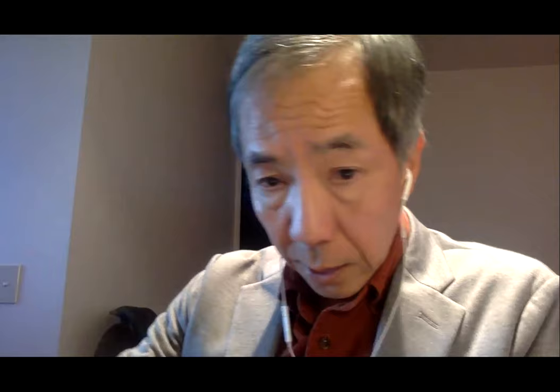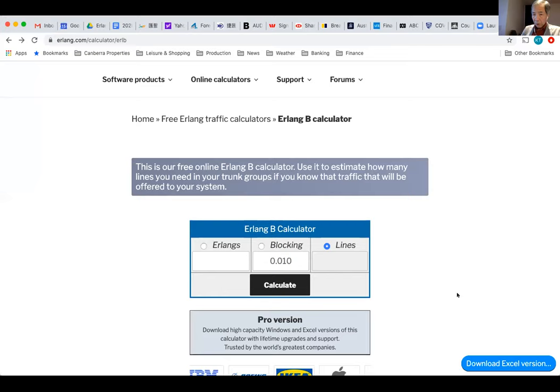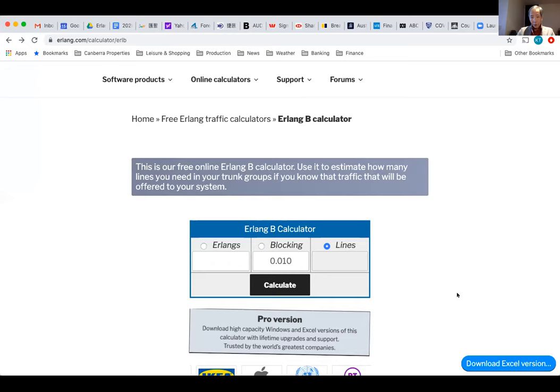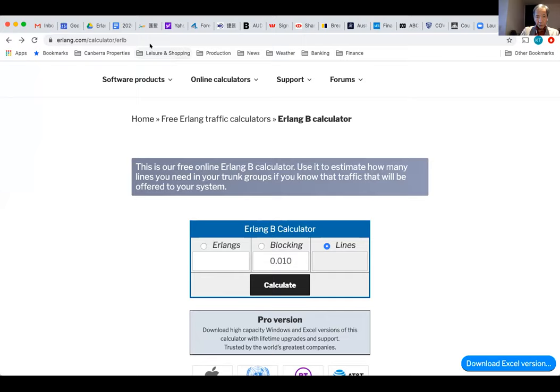How do I calculate time congestion? You just use a calculator and punch out the values. If N is large, it's quite a long calculation, so there are online calculators. This is an example from Erlang.com calculator/ERLB, which stands for Erlang B formula.